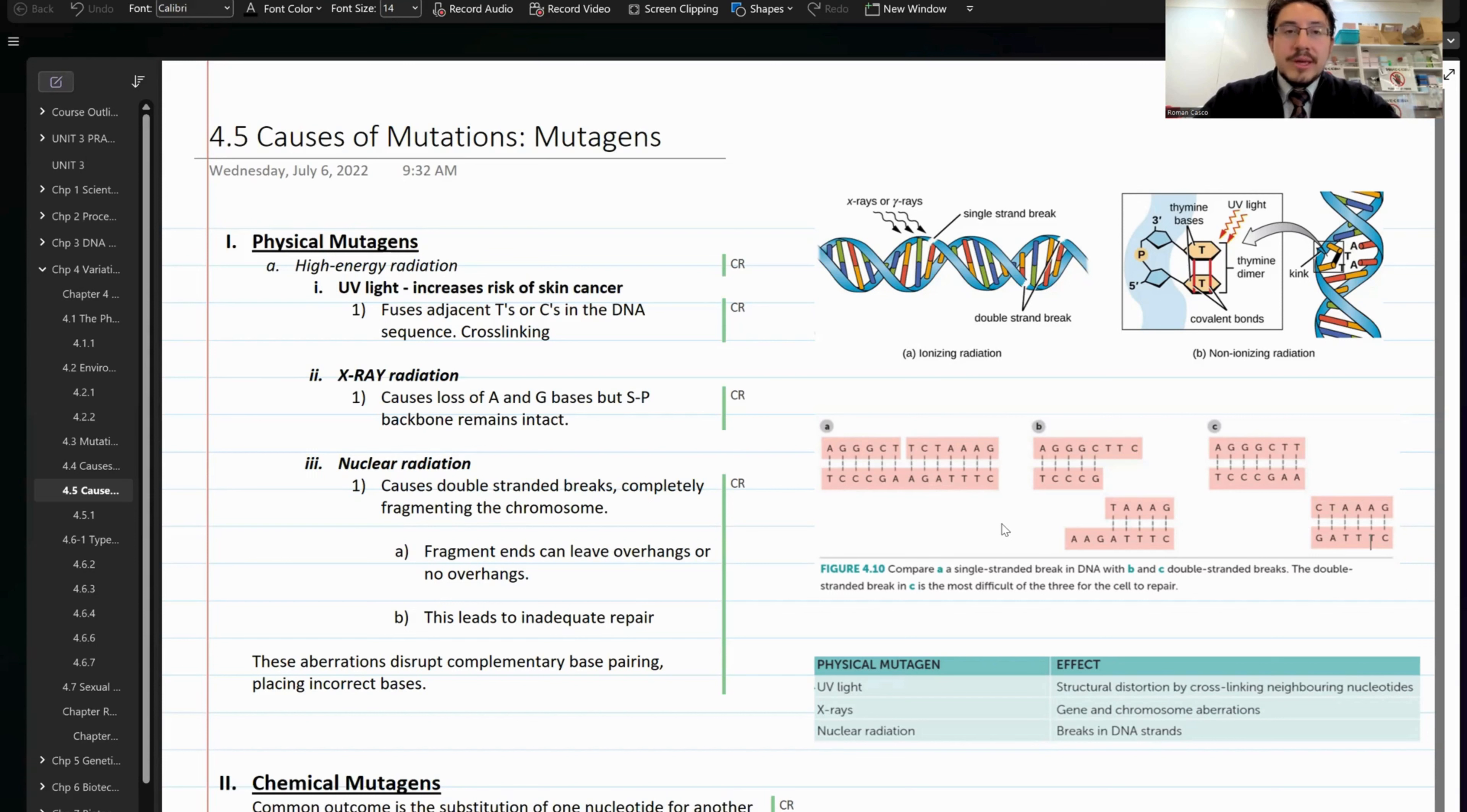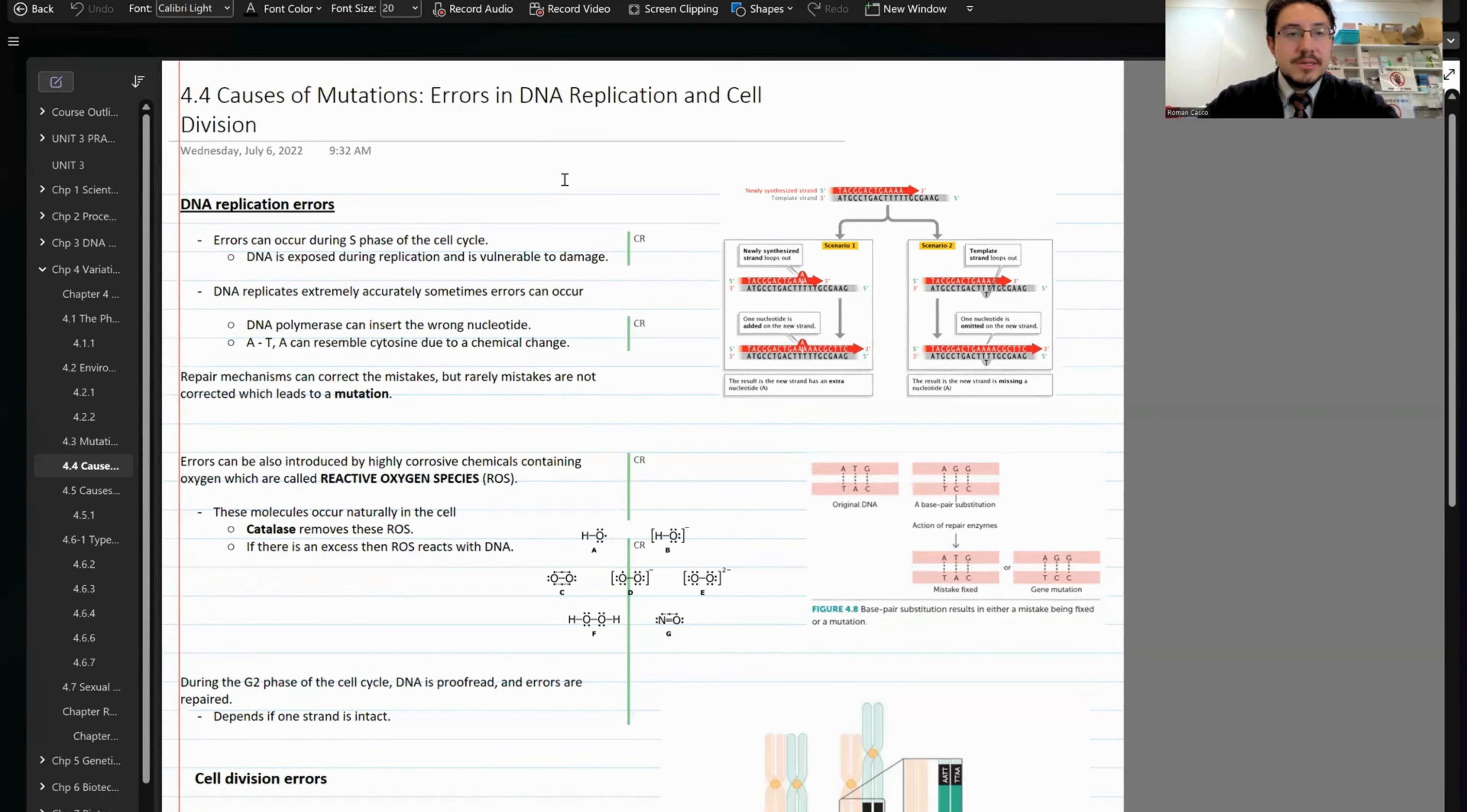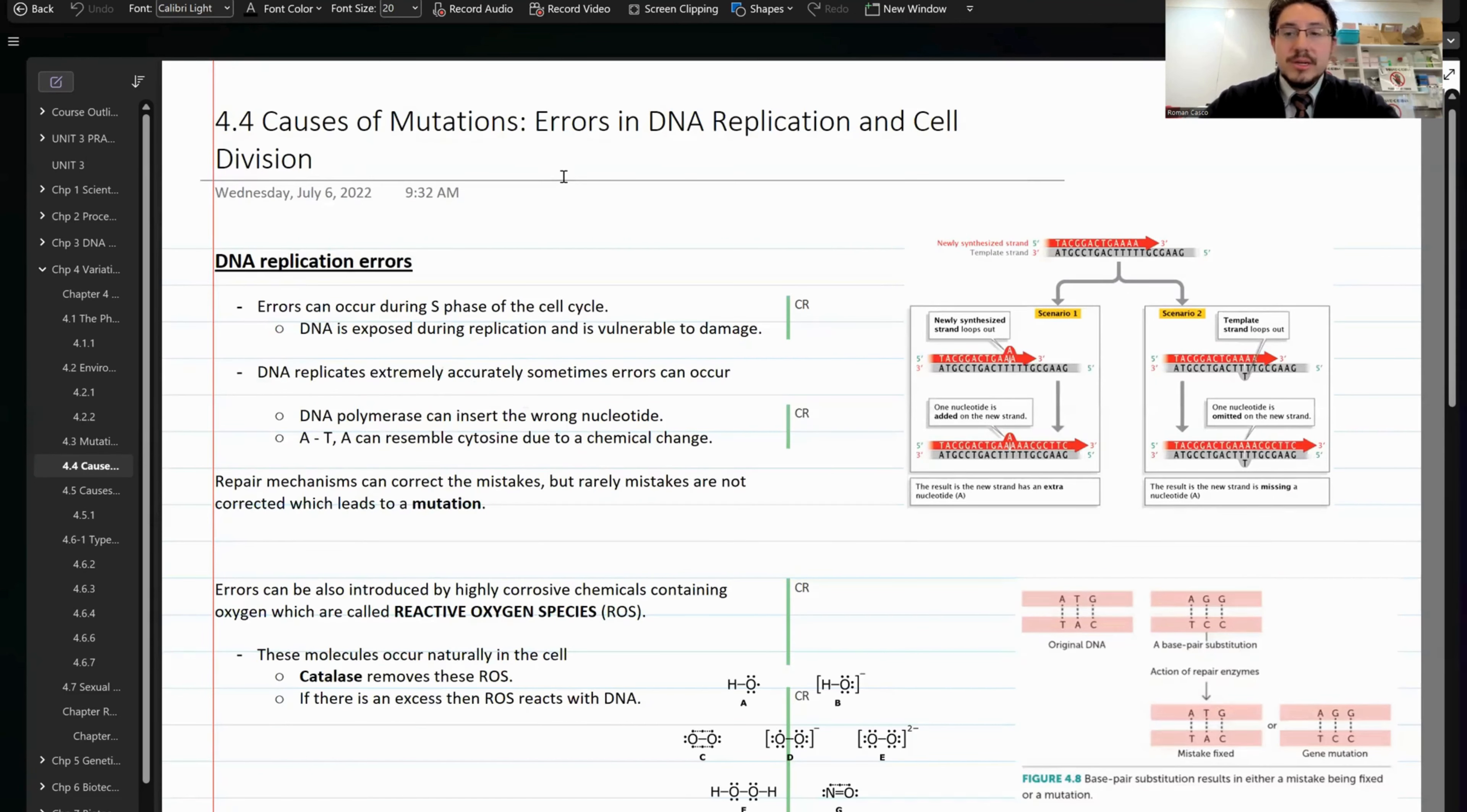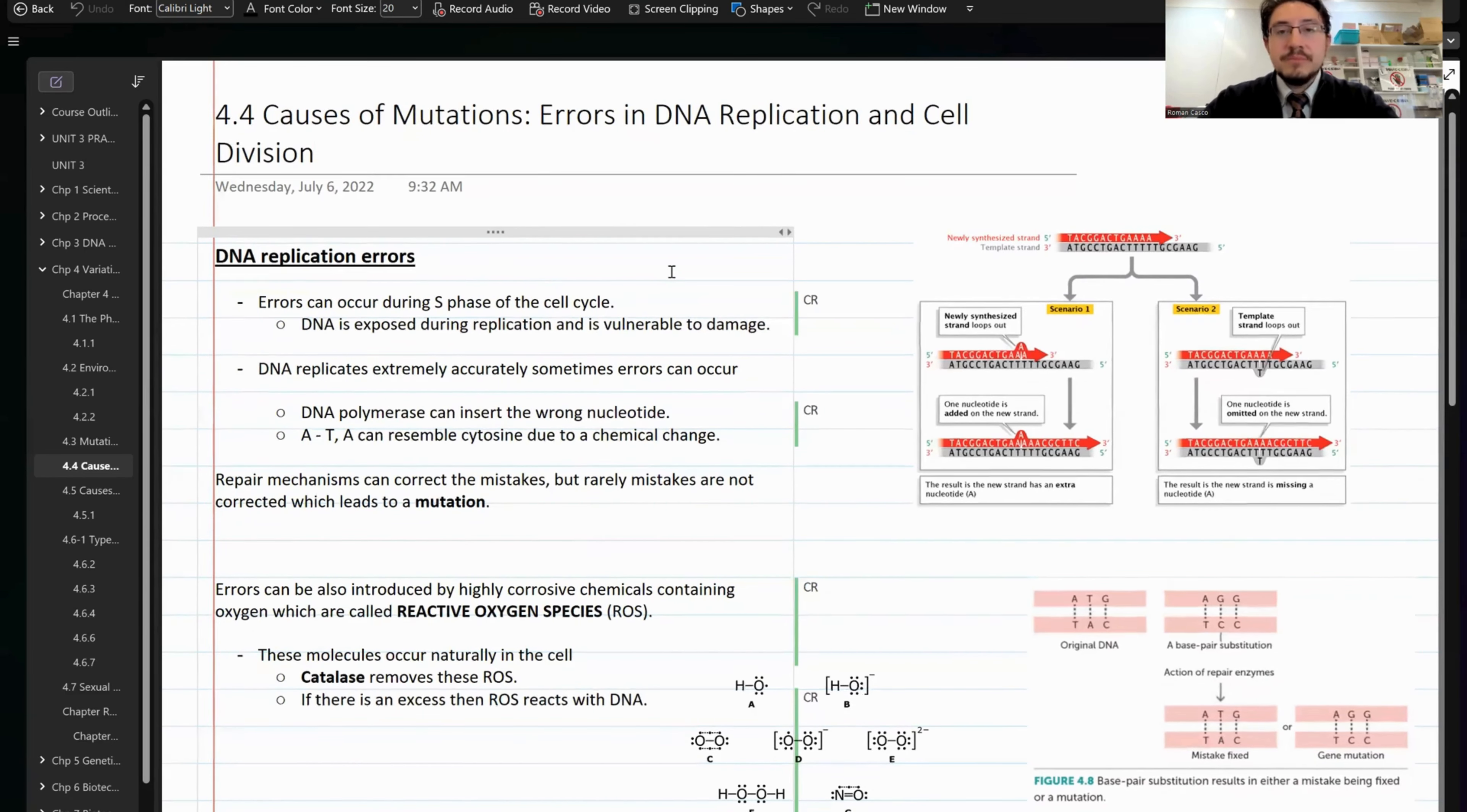There are many ways in which DNA sequences can get their sequences changed. The DNA can get their sequences changed from physical mutagens, chemical mutagens, or biological agents. In these sections I'm going to talk about today, we're going to take a look at the various ways in which the sequences of DNA can get altered permanently, causing a mutation.